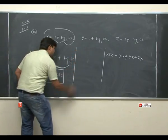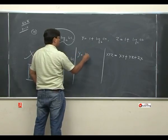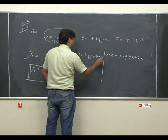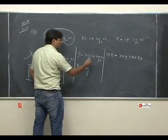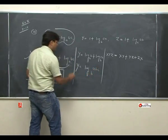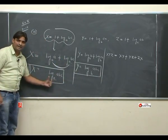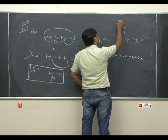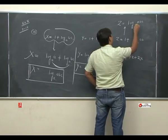Similarly, y को उठाते हैं: y = 1 + log ca base b = log b base b + log ca base b = log(abc) base b. इसी तरीके से z को directly लिख देते हैं: z = log(abc) base c. तो x = log(abc) base a, y = log(abc) base b, z = log(abc) base c.